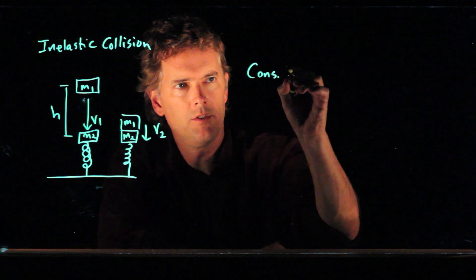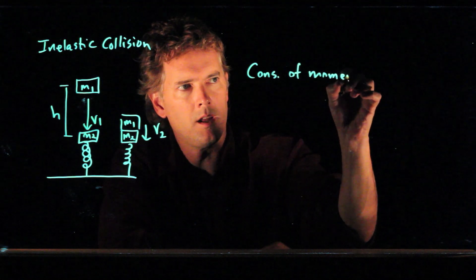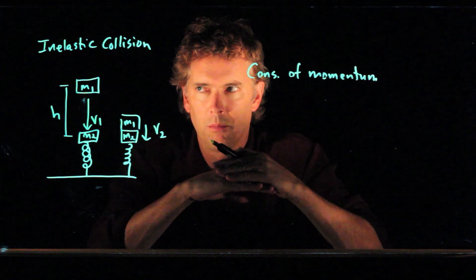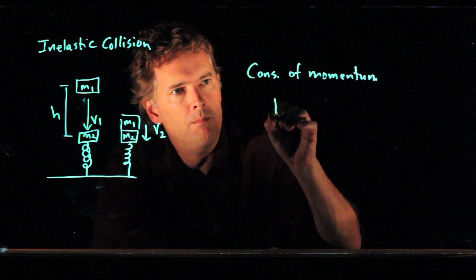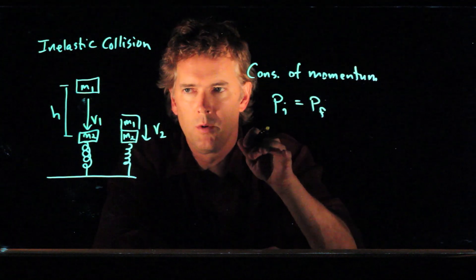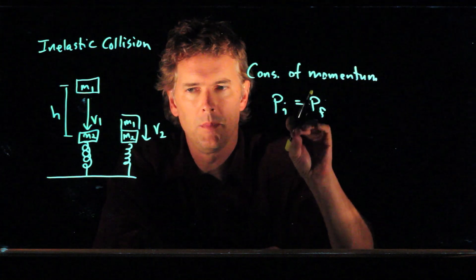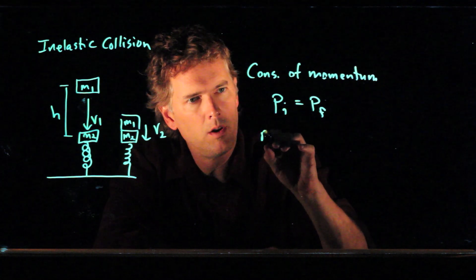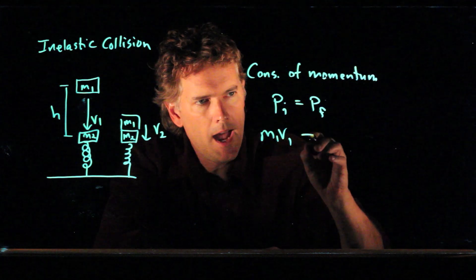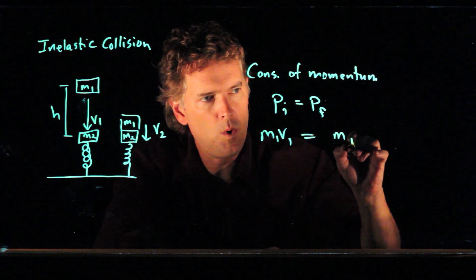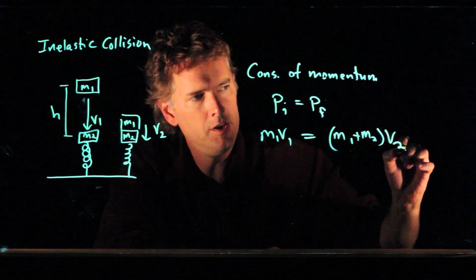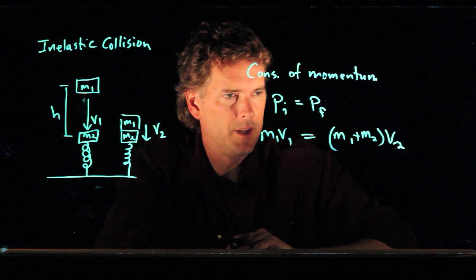What happens in that collision is things get deformed, they stick together. We're saying it's completely inelastic. So momentum initially has to be equal to momentum finally, where initially we mean just before the collision and finally we mean just after the collision. It's all box number one moving, so it's M1 V1. Afterwards, it is M1 and M2 moving together at a speed V2. Conservation of momentum tells us that.